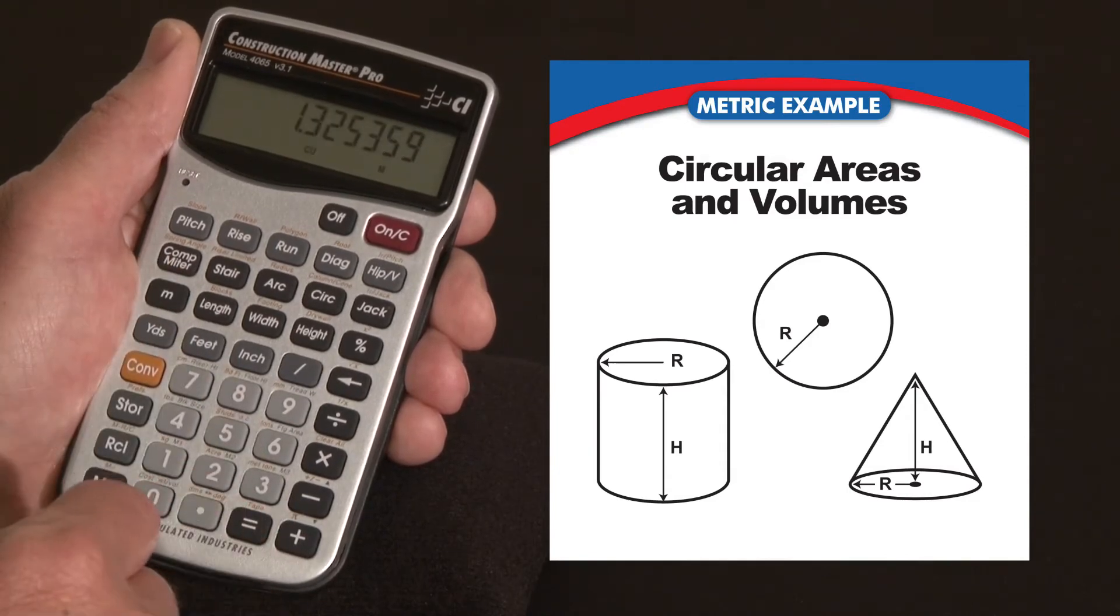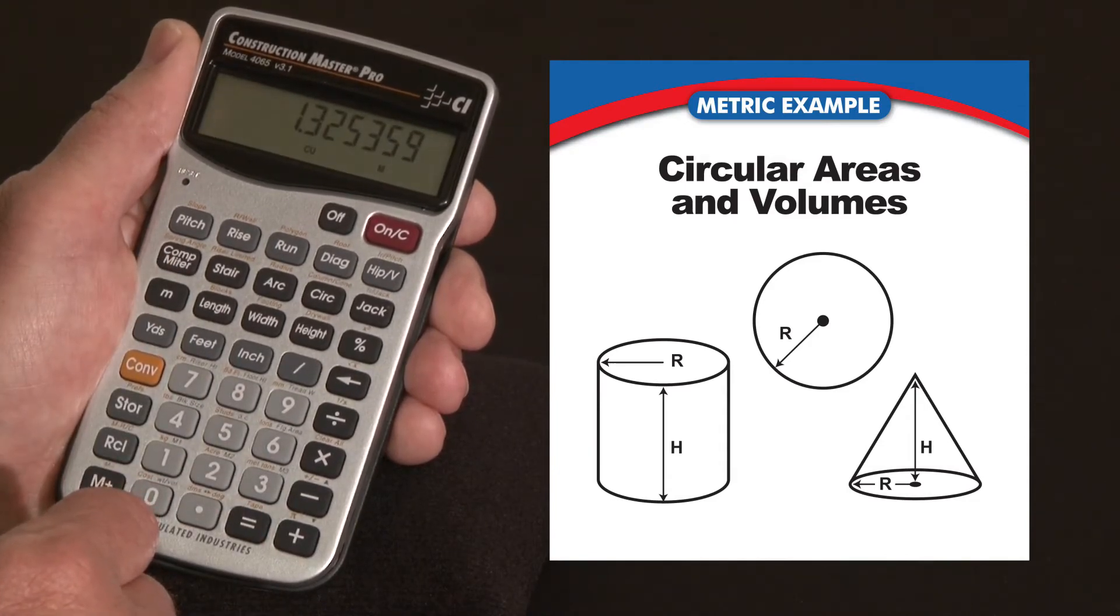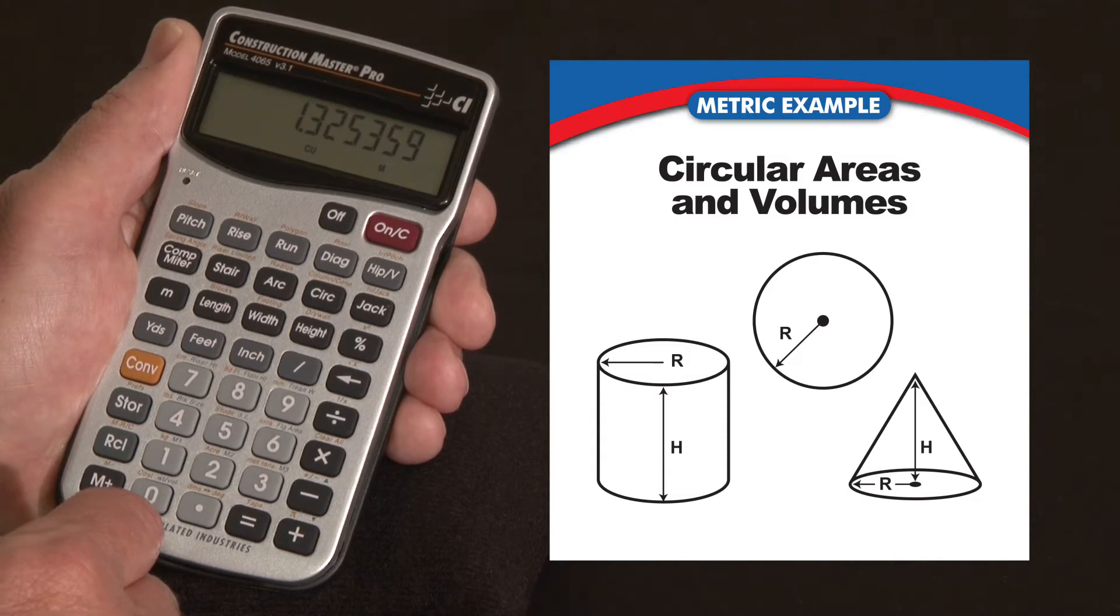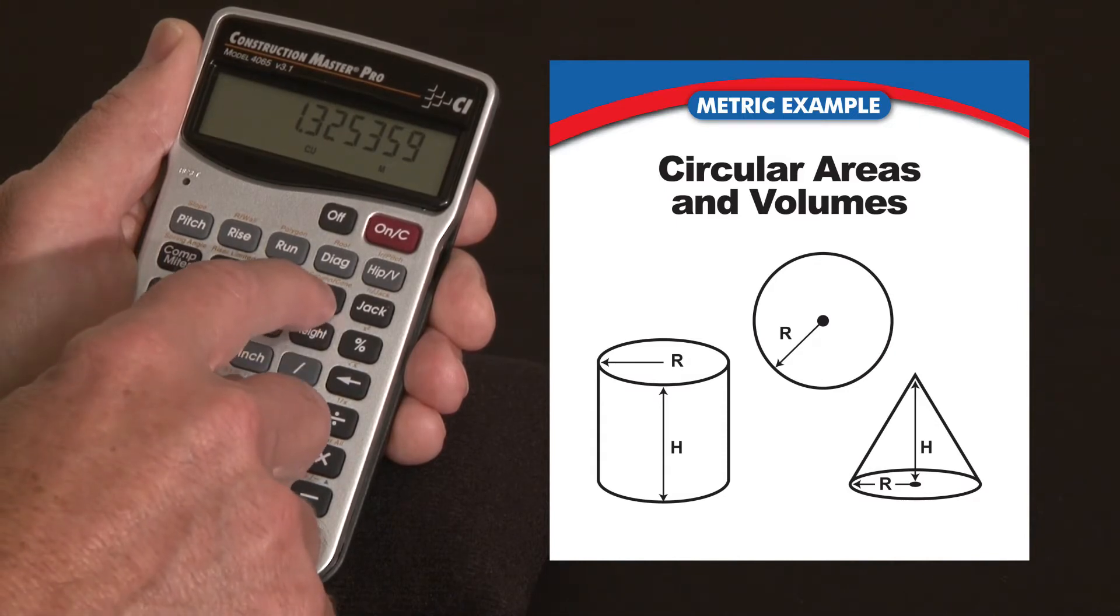3 meters equals 1.3 something cubic meters. Another function you can use is the column and cone function.